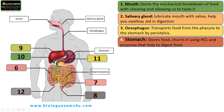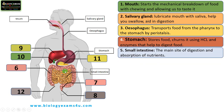Then the food moves to the small intestine, which is the main site of digestion and absorption of nutrients. Here the end products of digestion are absorbed, and nutrients are absorbed into the bloodstream through the walls of the small intestine. The food moves slowly as absorption takes place, and the remaining undigested matter moves to the large intestine.